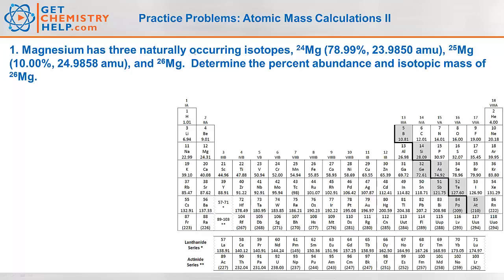Now it says that magnesium has three naturally occurring isotopes. The first one is magnesium-24 which has an abundance of 78.99% and an isotopic mass of 23.9850 AMU. The second isotope is magnesium-25 which has an abundance of 10.00% and an isotopic mass of 24.9858 atomic mass units. And then magnesium-26 which we don't know anything about. So it wants me to find the percent abundance and the mass of magnesium-26.